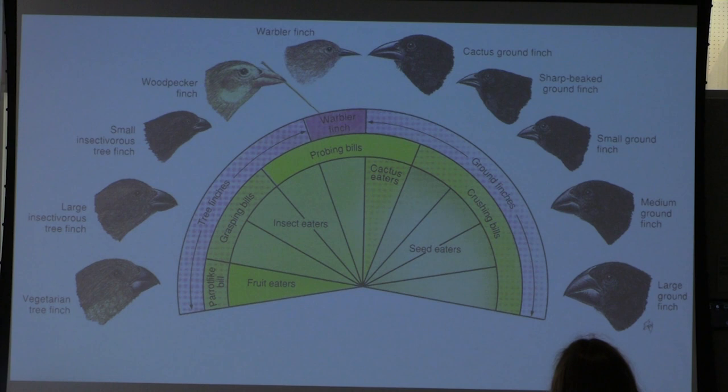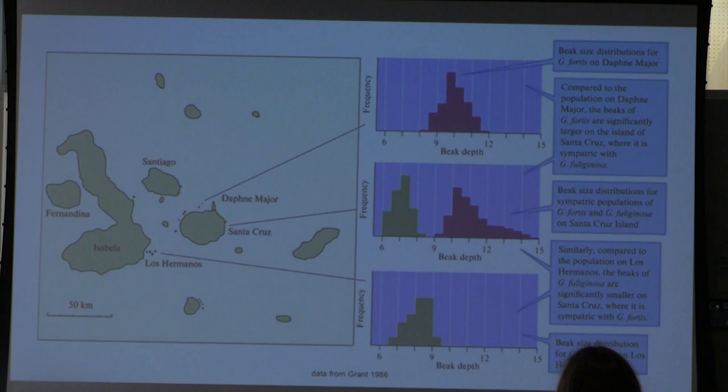Some finches targeted large, tough seeds — those were the largest birds with the deepest beaks. Others focused on small, delicate seeds and tended to have smaller body sizes. This reflects efficient energy use: it's not efficient for a large finch to target many tiny seeds. This mirrors what we see with bats — a large bat goes after large beetles and moths rather than mosquitoes, while a small bat targets small insects, avoiding expending more energy than they can take in.